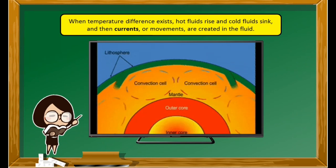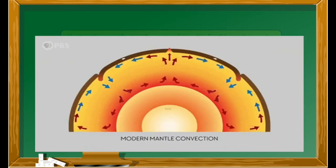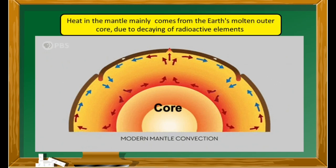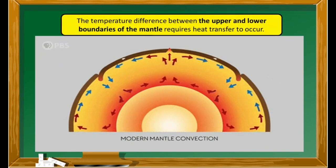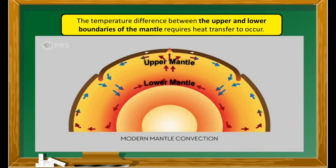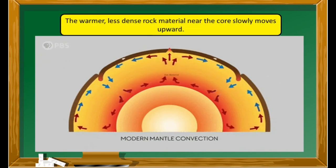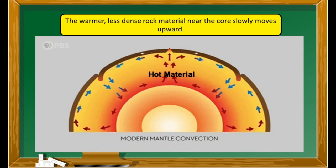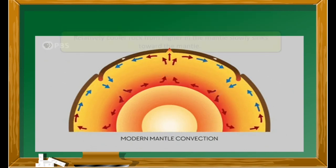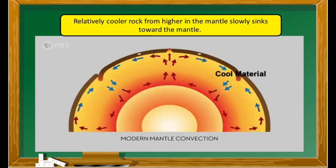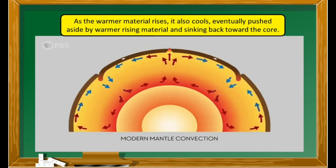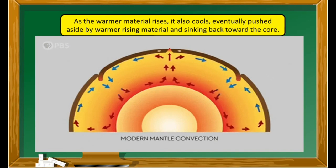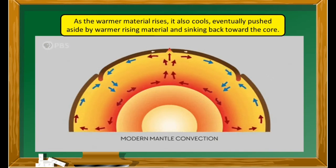Convection can also happen in the mantle. Heat in the mantle mainly comes from the Earth's molten outer core due to decaying of radioactive elements. The temperature difference between the upper and lower boundaries of the mantle requires heat transfer to occur. The warmer, less dense rock material near the core slowly moves upward, while relatively cooler rock from higher in the mantle slowly sinks. As the warmer material rises, it also cools, eventually pushed aside by warmer rising material and sinking back toward the core.